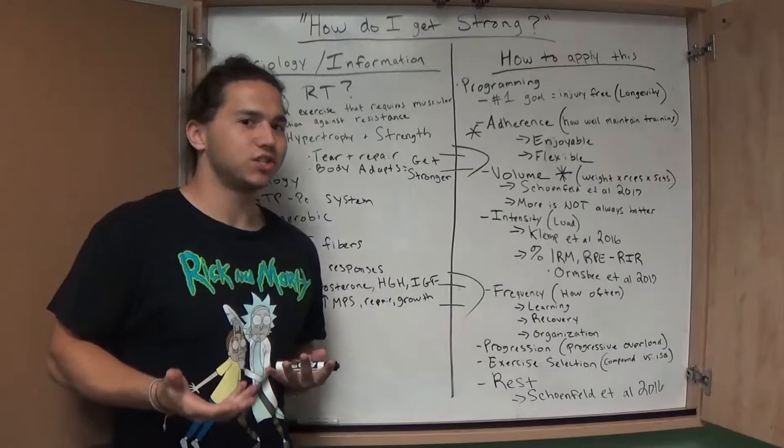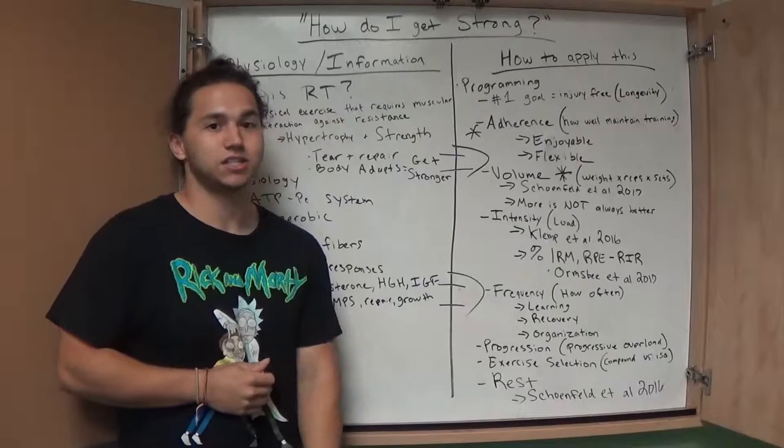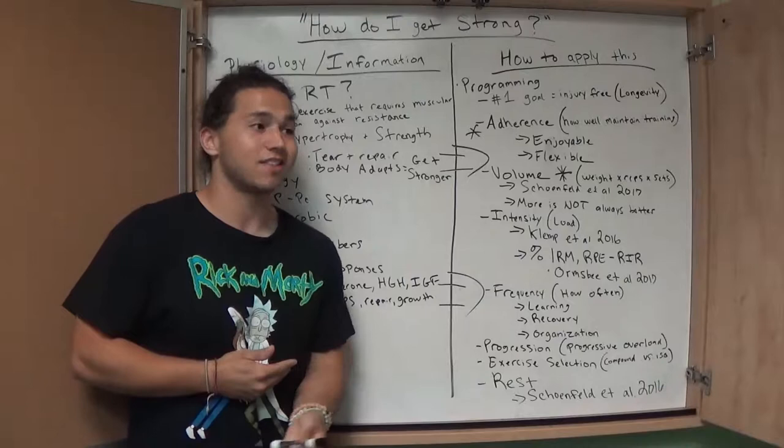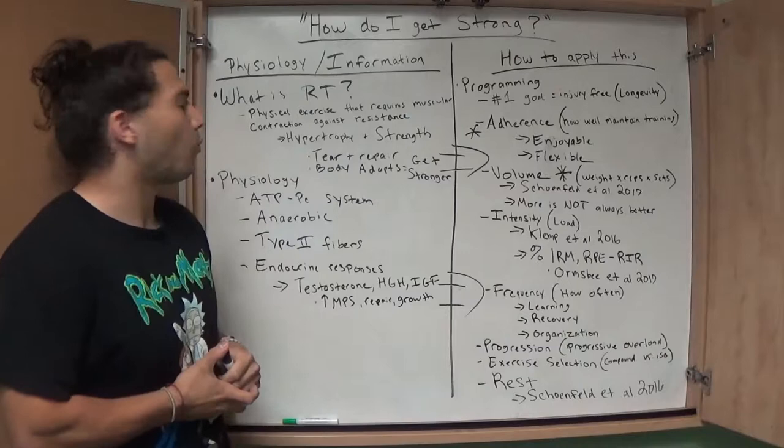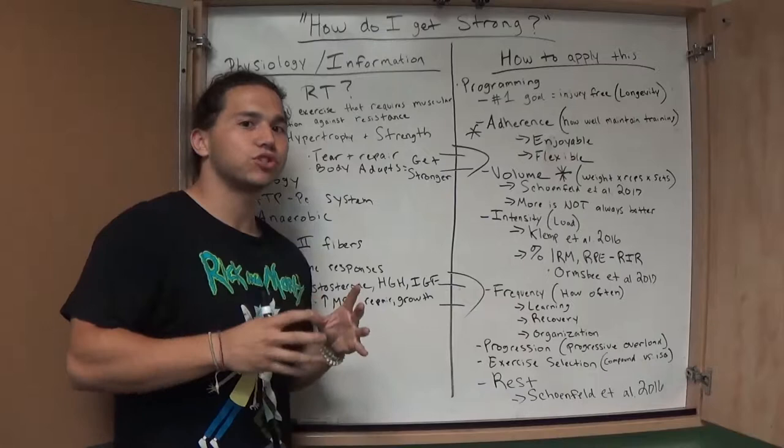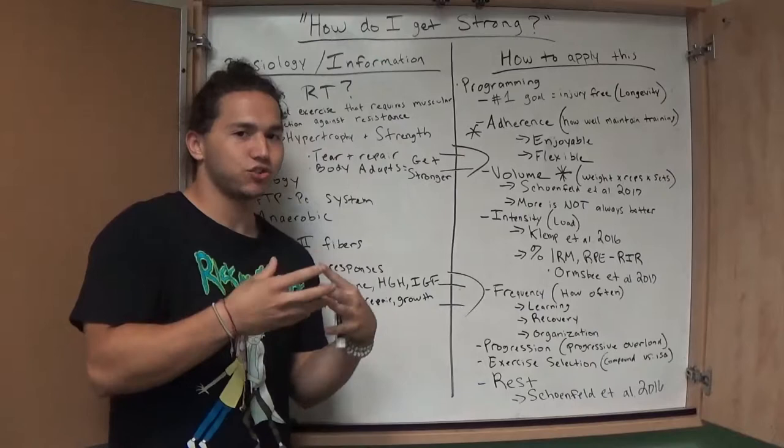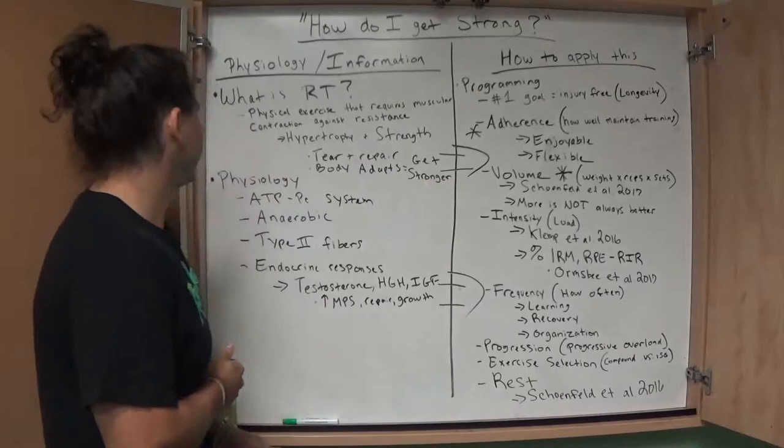So we're going to start off with what is resistance training? Resistance training is basically physical exercise that requires muscular contraction against their resistance, typically just lifting weights, and this elicits muscular hypertrophy and strength. Hypertrophy is just increasing muscle mass size and strength is how much the body can do in one repetition of the movement. So when you're resistance training, you're basically tearing down. You're going to have this microscopic tearing down your muscle fibers, these microscopic tears, and then when you're recovering, these tears repair, the body gets stronger, building a bigger muscle, and this is how your body adapts, and this is how you get stronger.